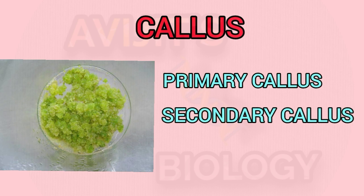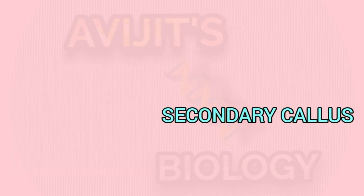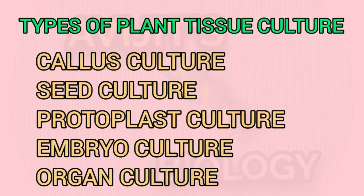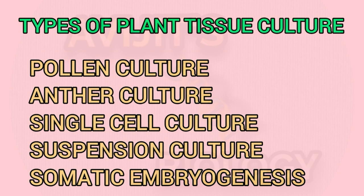Now let's discuss about the types of plant tissue culture. Plant tissue culture can be of many types: seed culture, embryo culture, callus culture, organ culture, and protoplast culture. Other types include pollen culture, anther culture, single cell culture, suspension culture, and somatic embryogenesis. These are the main types of plant tissue culture.